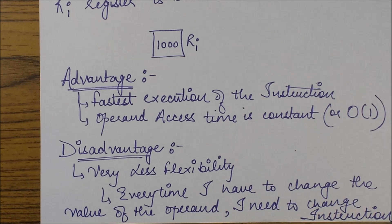So what is the disadvantage? The disadvantage is that this instruction mode offers very less flexibility. How is it so? See, every time I need to change the value of this operand, I'll have to fetch or look for this instruction in my entire code or in my entire set of instructions and I'll have to change the entire instruction. So this is a big disadvantage when we are thinking of working at a programming level.